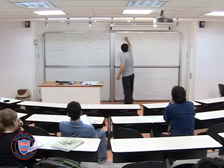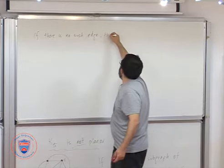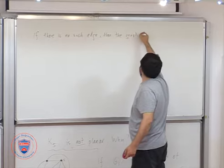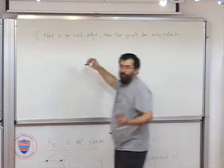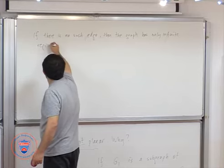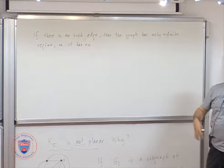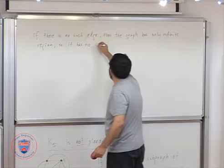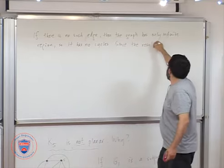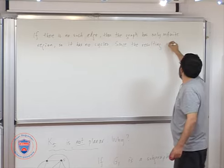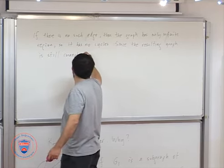Okay, if there is no such edge, then the graph has only infinite region. So you only have one region. So it has no cycles. So if there is a cycle, it will bound to infinite from a smaller inside region, right? So that means it has no cycles. And it's connected, since the resulting graph is still connected. We get a tree.